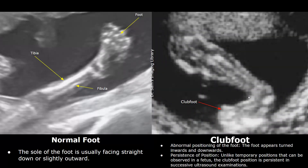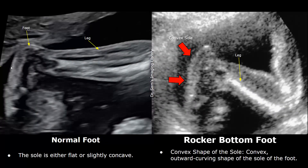In a club foot, there is abnormal positioning of the foot — the foot appears turned inwards and downwards and will persistently remain in this abnormal position. This type of fixed position is termed club foot and can be seen in a fetus with Trisomy 18. The normal shape of the sole is either flat or slightly concave. In a rocker bottom foot, the sole will have a convex shape, bulging outwards instead of being flat or slightly concave. This foot appearance is termed rocker bottom foot and can be associated with Trisomy 18.